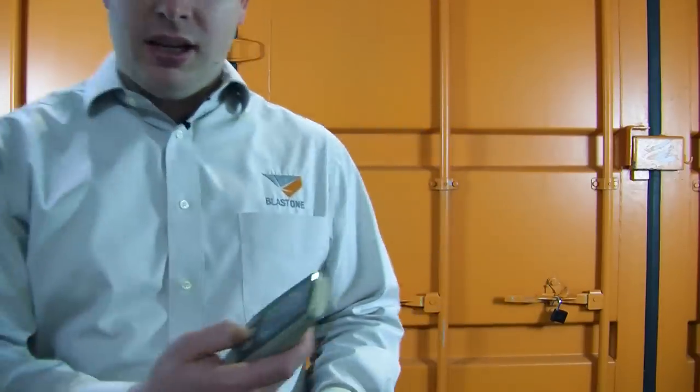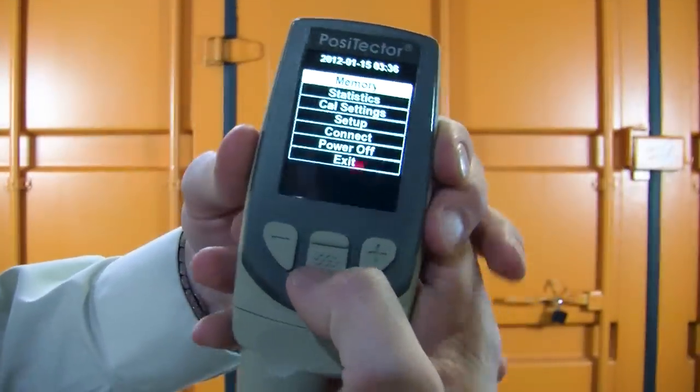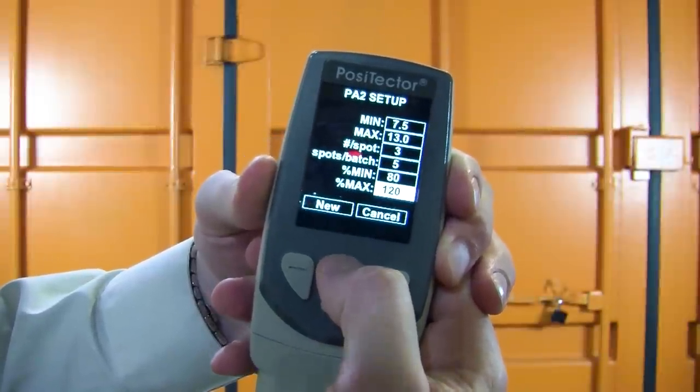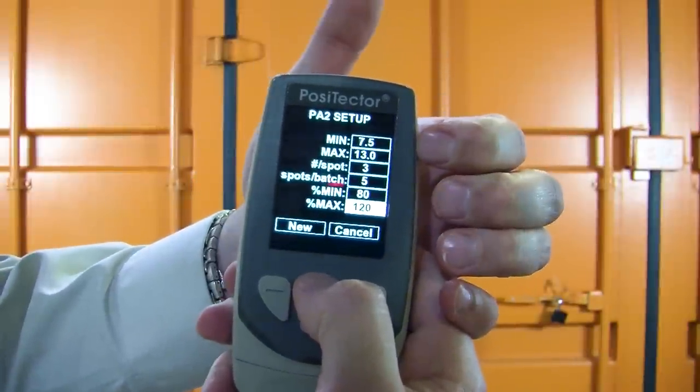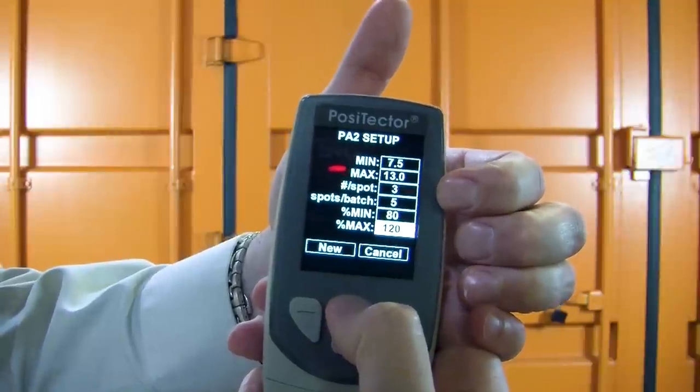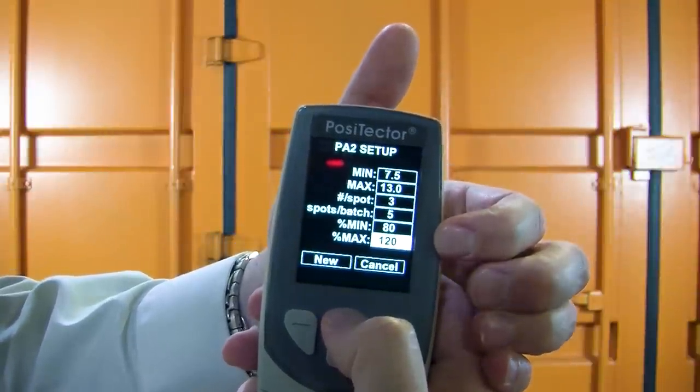We're going to explain how to use the DeFelsko PosiTector 6000 gauge to take readings according to the PA2 standards. They give us a handy setup here. Go to memory, a new PA2. You can see our measurements set up here. We've got a minimum mill reading of 7.5, a maximum of 13, three readings per spot, five spots per batch, and go to 80 and 120. So we're going to get a new batch.